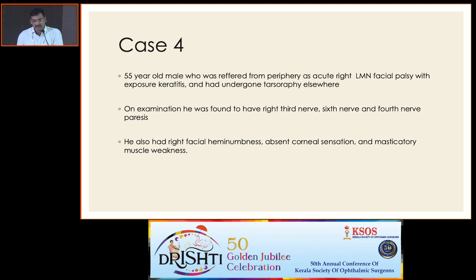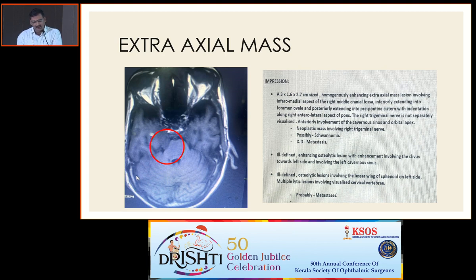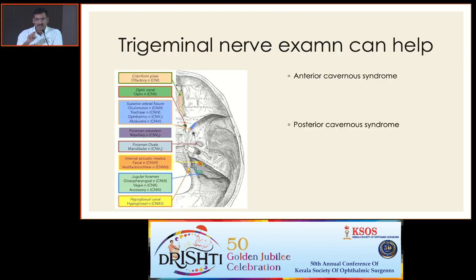The fourth case: a 55-year-old male referred as acute Bell's facial palsy with exposure keratitis who had undergone tarsorrhaphy elsewhere. On examination he had right third, sixth, and fourth nerve paresis, facial numbness, absent corneal sensation, and additionally masticatory muscle weakness. Imaging showed a large lesion arising from the trigeminal nerve and compressing the pons — diagnosed as metastasis. Testing trigeminal nerve sensation should be a basic test whenever encountering multiple cranial nerve palsy, as it helps localize the lesion.